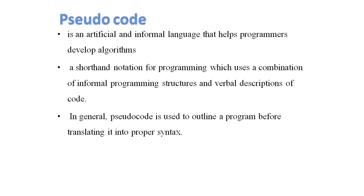What is pseudocode? Pseudocode is an artificial and informal language that helps programmers develop algorithms. It is a shorthand notation for programming which uses a combination of informal programming structure and verbal description of code. Pseudocode is used to outline a program before translating it into proper syntax.